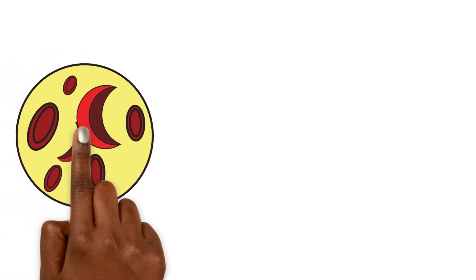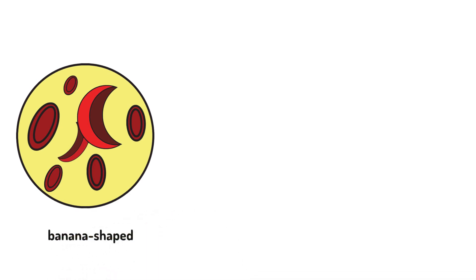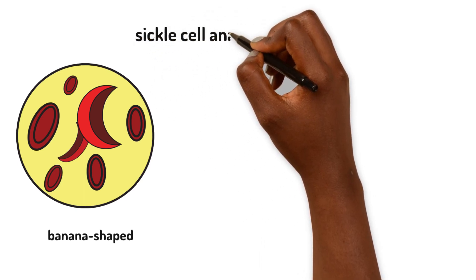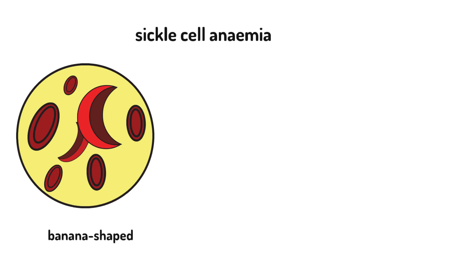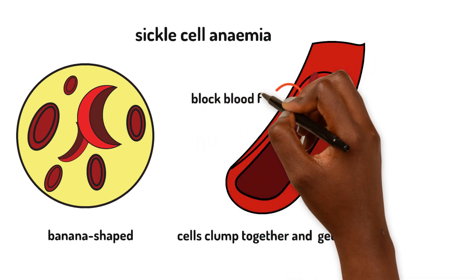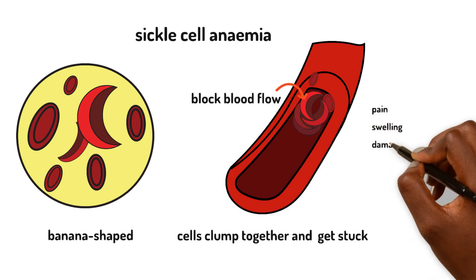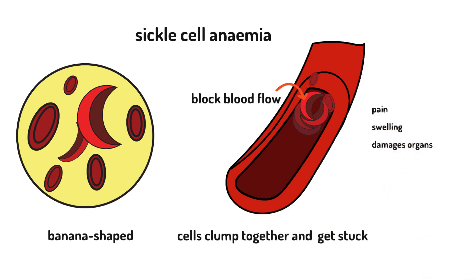Another red blood cell disorder is when the red blood cells are banana shaped rather than their donut shape. This particular disorder is called sickle cell anemia. These red blood cells clump together and get stuck in blood vessels. This can block the flow of blood. It can also cause pain,